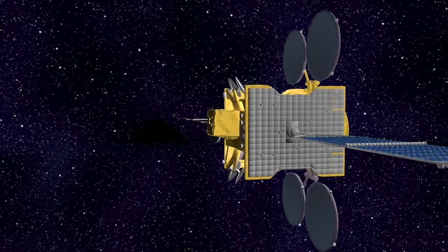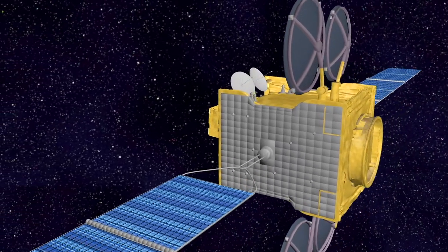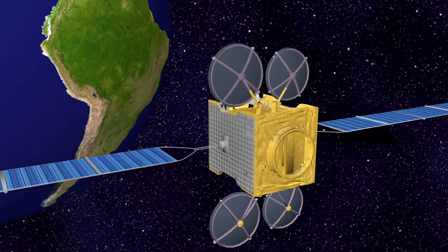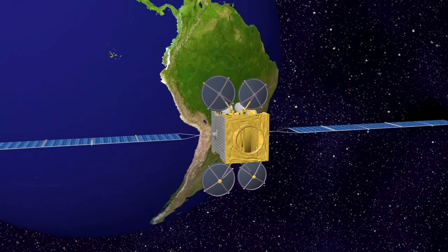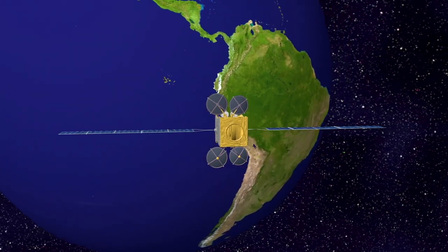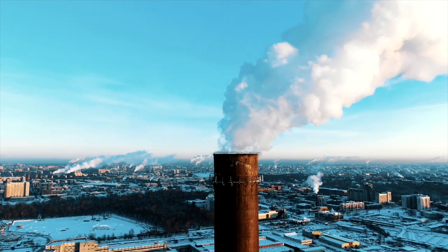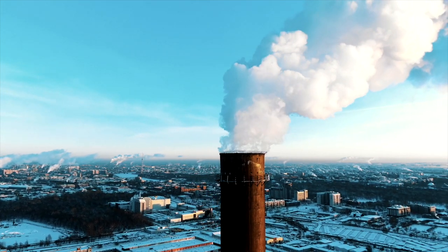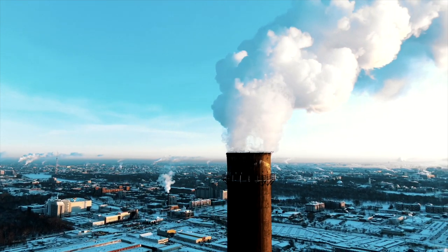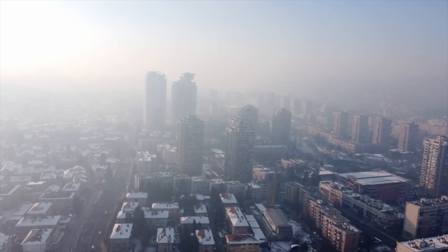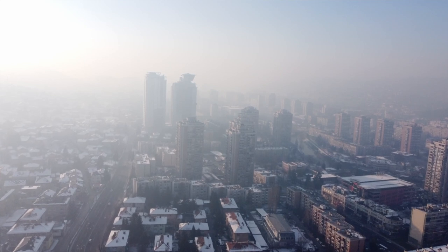So climate change and air quality are really intimately related. Some of these molecules that we're measuring in the atmosphere, some of these gases, these particles are also really important for understanding climate change. But as well, a lot of these pollution sources are emitting greenhouse gases, and so it's really essential to understand what's going on with these pollution sources, but also provide data to the community, the science community, on the gases that we can measure so they can better understand the atmosphere.